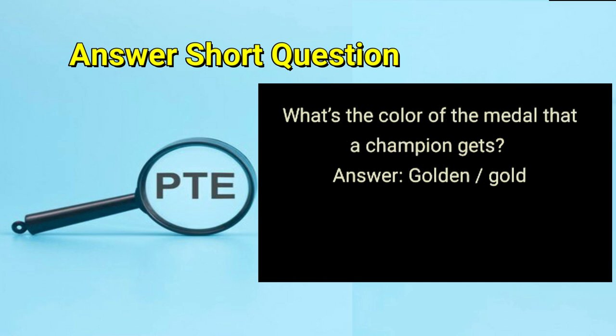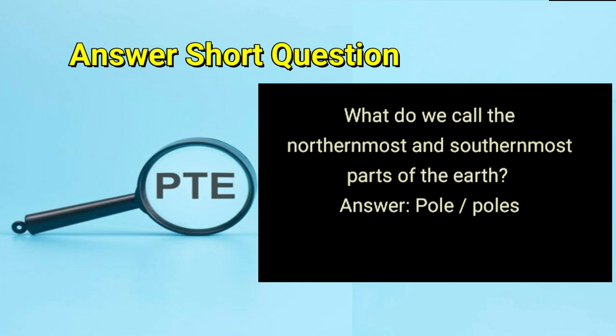What's the color of the medal that a champion gets? Answer: golden or gold. What do we call the northernmost and southernmost parts of the earth? Answer: pole or poles.